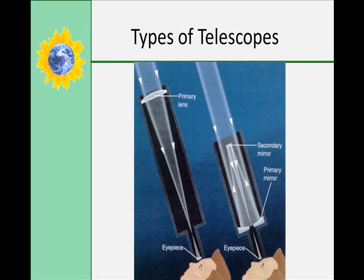There are a couple of different types of telescopes, and they collect electromagnetic radiation at different wavelengths. Refracting telescopes use convex lenses to focus light, and reflecting telescopes have a curved mirror in place of the objective lens.